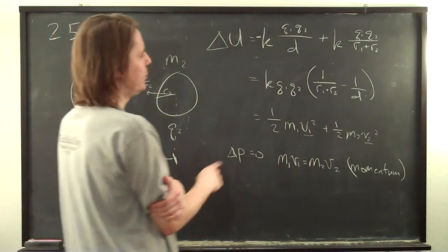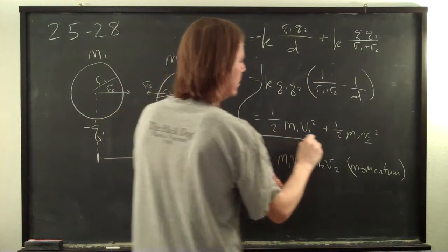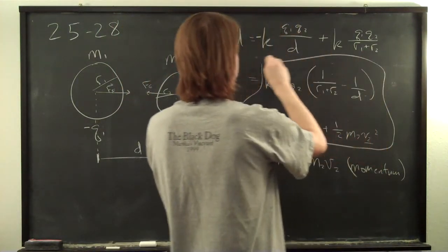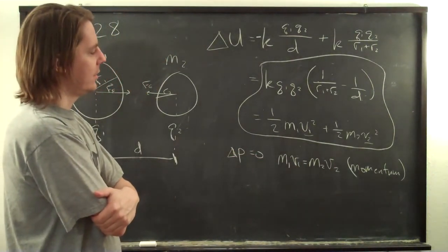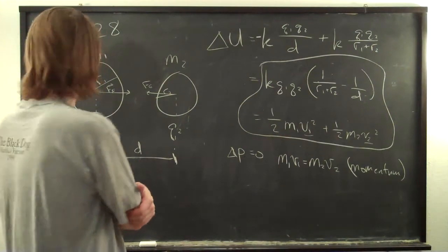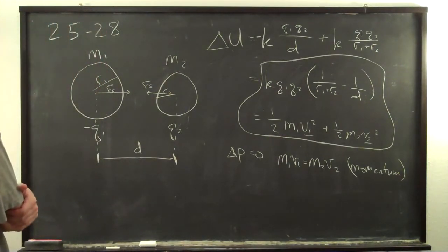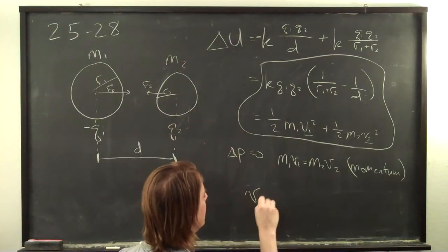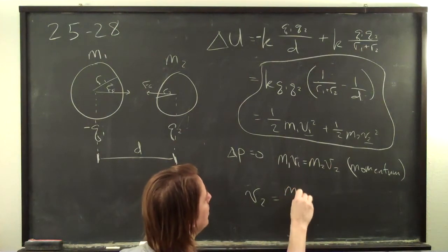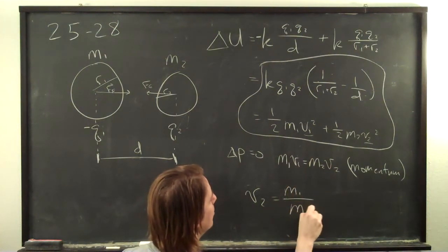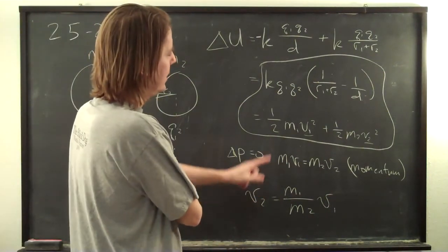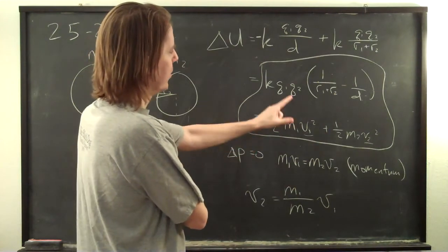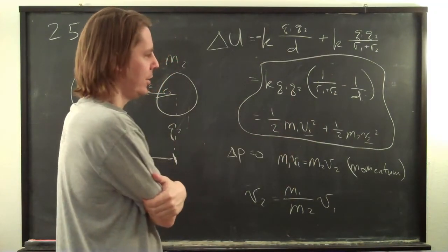So now we have two equations and two unknowns. So here is your equation related to the energy, and here is how you can substitute to get everything in terms of v1 or everything in terms of v2. So, let's see, how did I do it? I did it by solving for v2. V2 is m1 over m2 v1, and then I went and plugged that into here, into the energy equation.